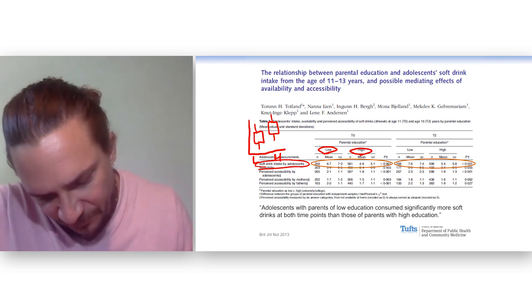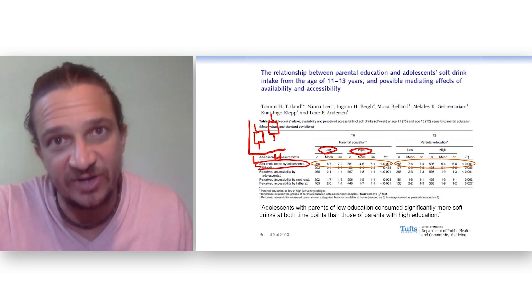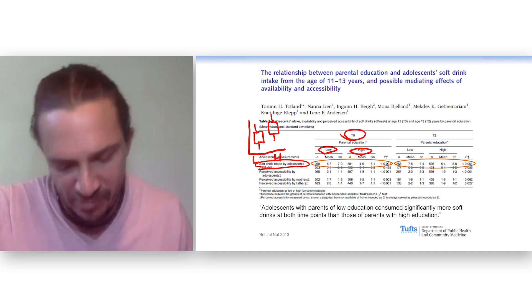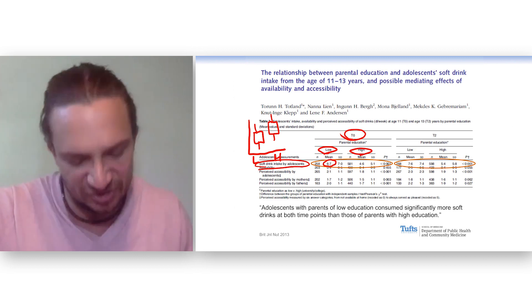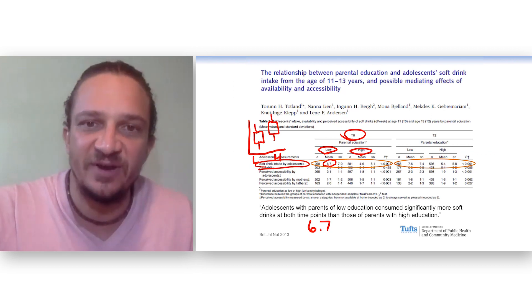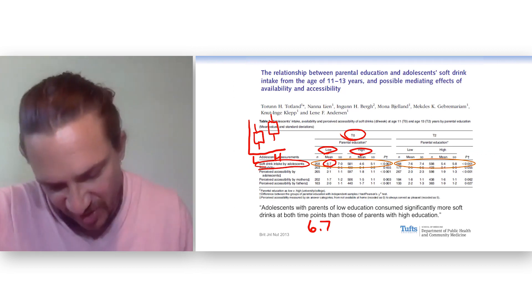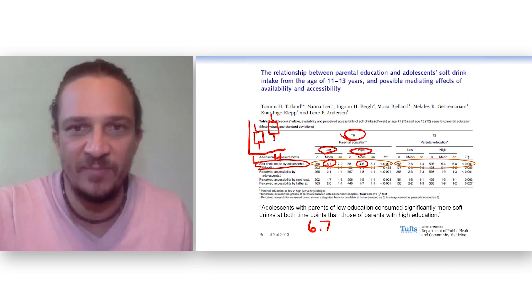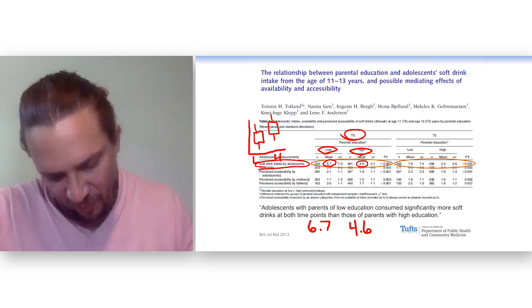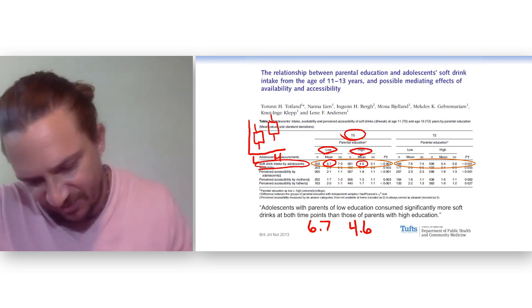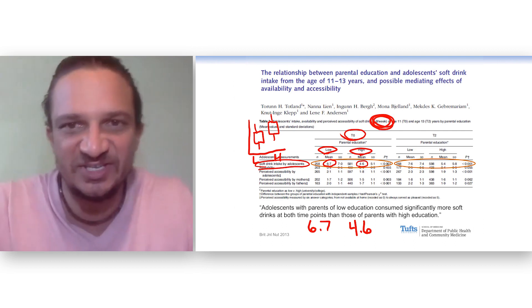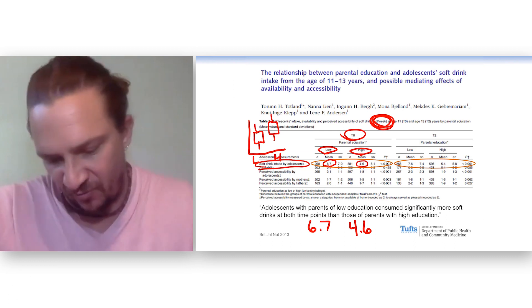And so what we see here is that this study was done at two time points. We see at baseline, children of parents with low education had a mean soft drink consumption of 6.7. Children of parents with higher education had a mean soft drink consumption of 4.6. I'm looking to see what the units are. Oh, I see it right here in the title. Deciliters per week. I don't really know what that is.